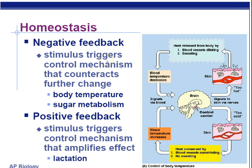Homeostasis — negative feedback is the most common type. Body temperature and sugar metabolism are both examples of negative feedback, or reversing a trend. Lactation is a good example of positive feedback: once the child starts suckling, that releases more milk, which releases more oxytocin in the brain, which releases more milk, and so forth.